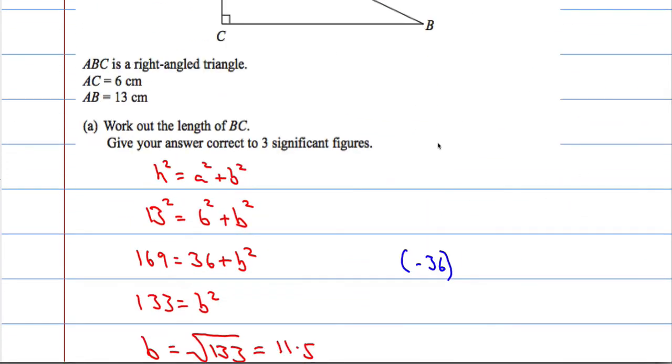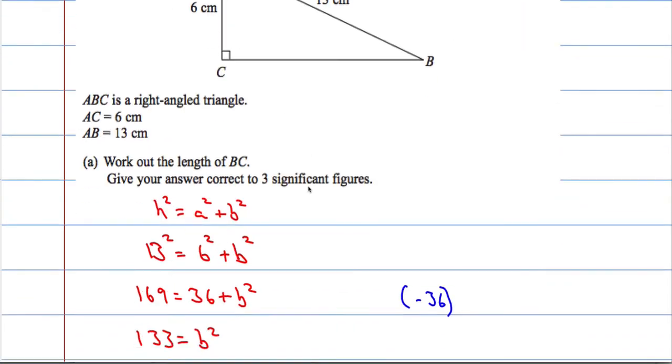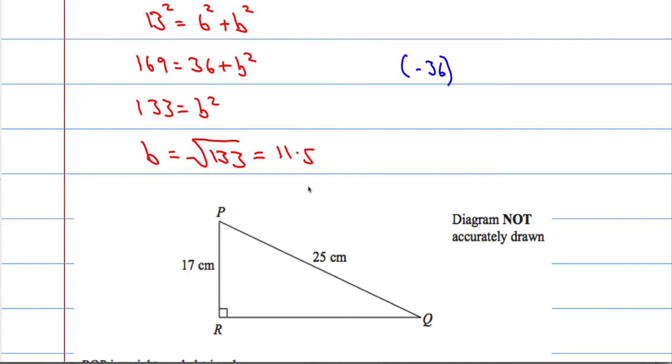Slightly less algebraic way of doing it. We're looking for a short side, so I'm going to square both numbers, subtract, and then take the square root. You might have seen that in a previous video.